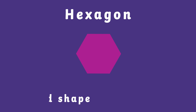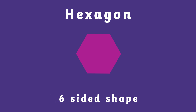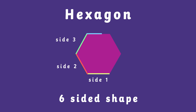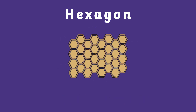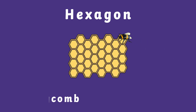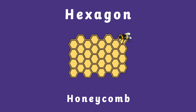Hexagon is a six sided shape. Bees make honeycomb that is made up of lots of hexagons to store their honey.